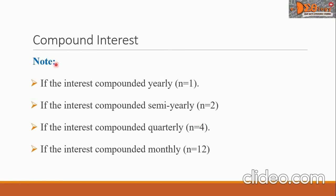Please note: if the interest is compounded yearly, N equals 1. If compounded semi-yearly, N equals 2. If compounded quarterly — meaning every 3 months — N equals 4. If compounded monthly, N equals 12.